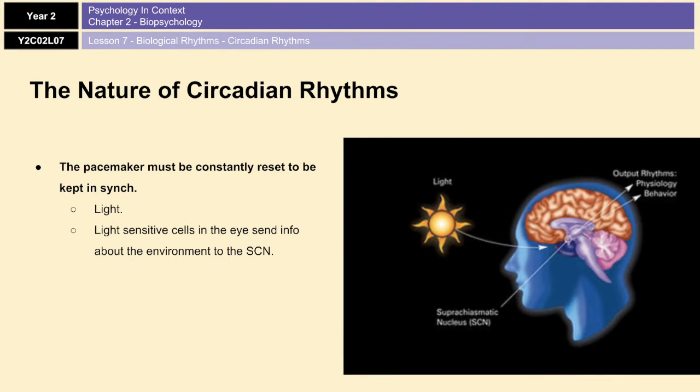The way that works in mammals is that light-sensitive cells within the eye actually act as a brightness detector, sending messages about environmental light levels directly to the SCN. And then the SCN uses that information to coordinate the activity of the entire circadian rhythm.